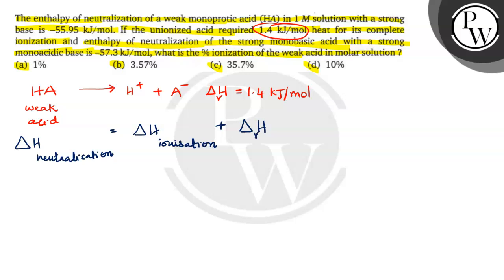So, delta H of the reaction is H+ plus OH- combined together to form 1 mole of H2O. This is delta H of neutralization of strong acid and strong base. And this value is equal to -57.3 kilojoules per mole.